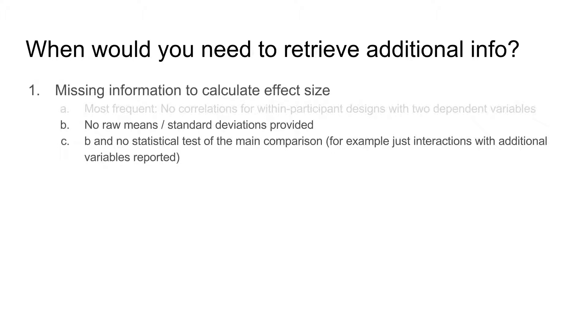Finally, and most urgent but fortunately less common, you cannot compute effect sizes at all because neither the raw data nor the test statistic for the comparison of interest are reported. Do not use parts of an interaction term here.